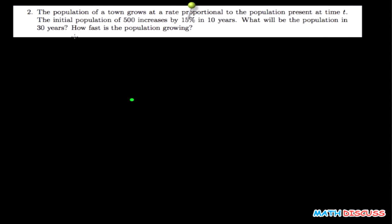In trying to solve a problem like this, you need to watch out for the statement that depicts the differential equation that models the behavior of the processes in the problem. From the very first statement, this is where I'm going to get my differential equation. It says the population of a town grows at a rate proportional to the population present at time t. I need to represent my population with a variable, so I'm going to start by representing my population with p.